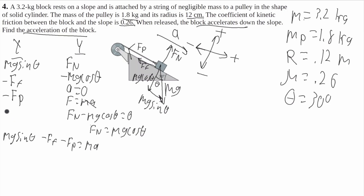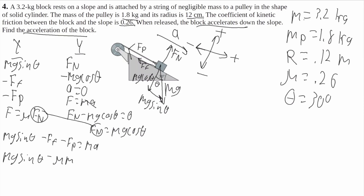Now force of friction is equal to mu times Fn, and it's the same Fn as before. So I'll get Mg sine of theta minus mu Mg cosine of theta minus the force of the pulley is equal to MA.